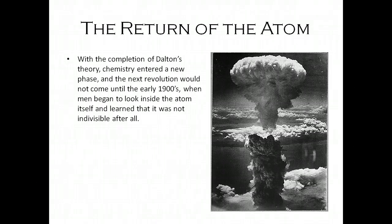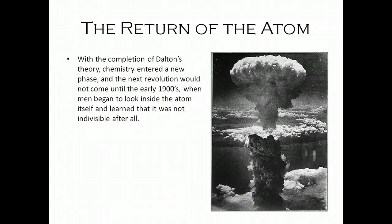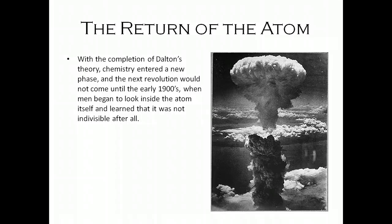With the completion of Dalton's theory, chemistry entered a new phase. The next revolution would not come until the early 1900s, when people began to look inside the atom itself and learn that it was not indivisible at all. Maybe Dalton thought, 'We have truly arrived — everything is made of these indivisible particles called atoms, they all have characteristic weights, and they combine in simple small number ratios. We're done.' But they weren't done, because it turns out there are three parts to atoms, and then later it turns out there are three parts to those parts.